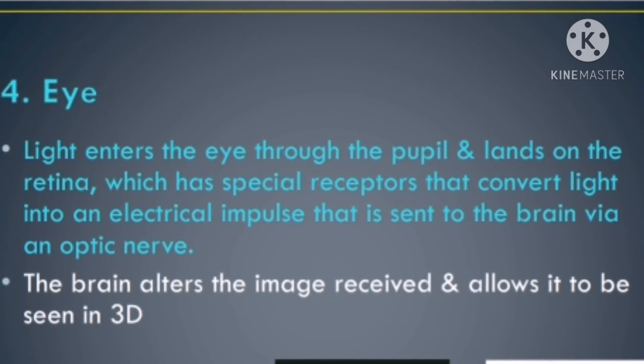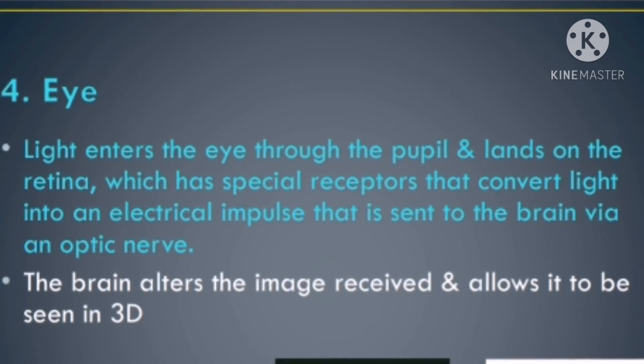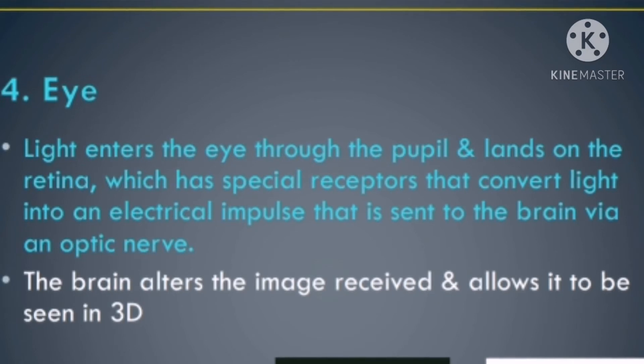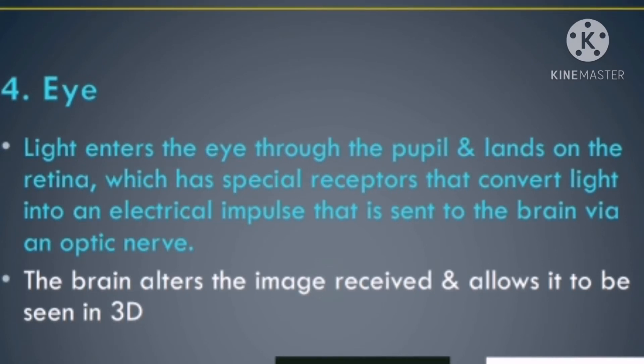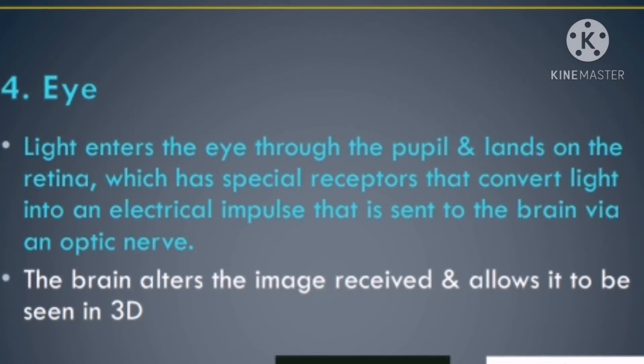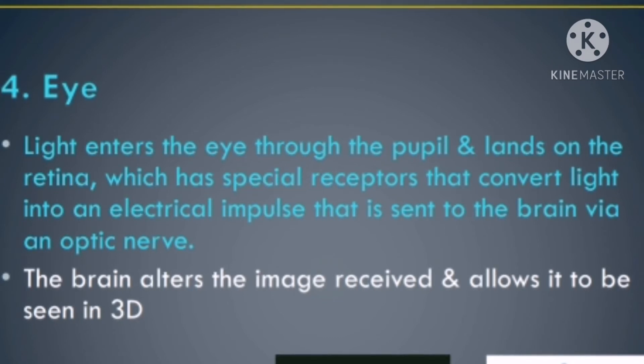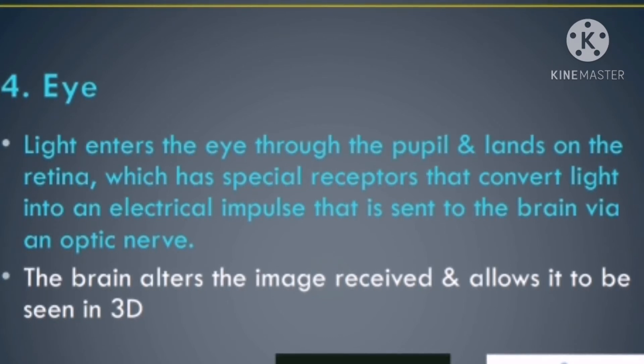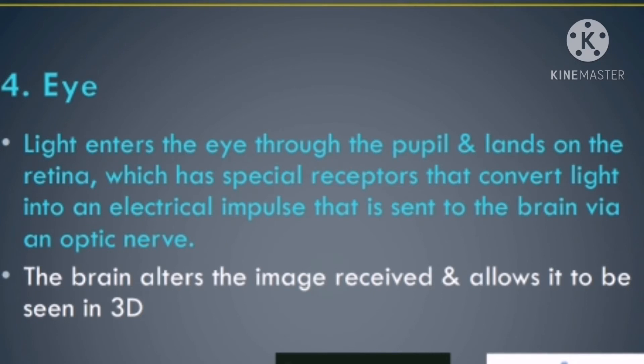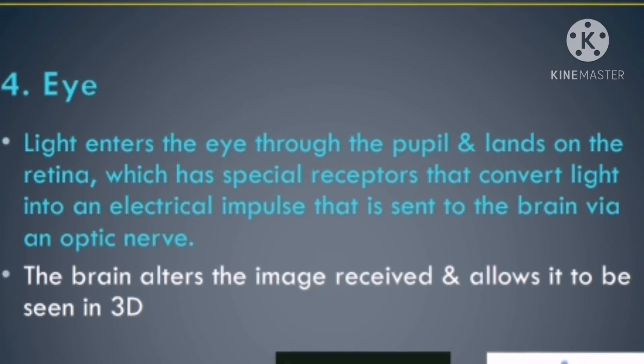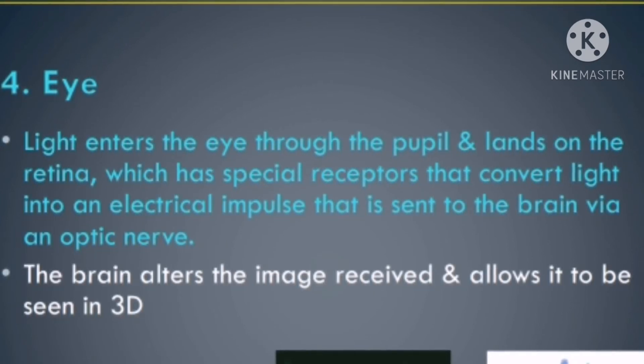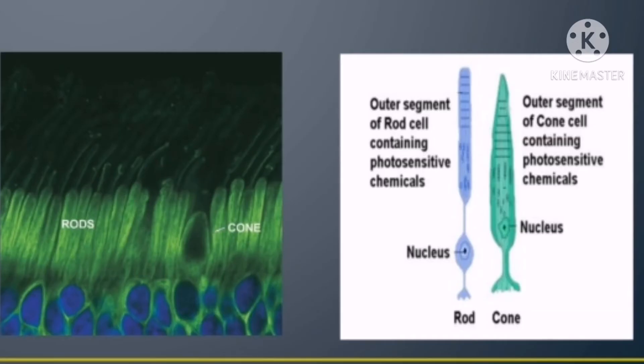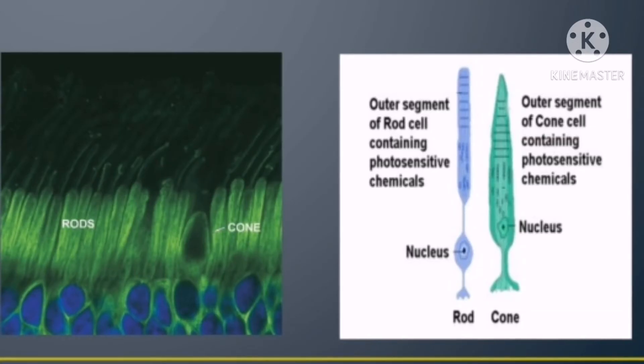Light enters the eye through the pupil and lens onto the retina, which has special receptors that convert light into an electrical impulse that is sent to the brain via the optic nerve. You can see that in the picture.